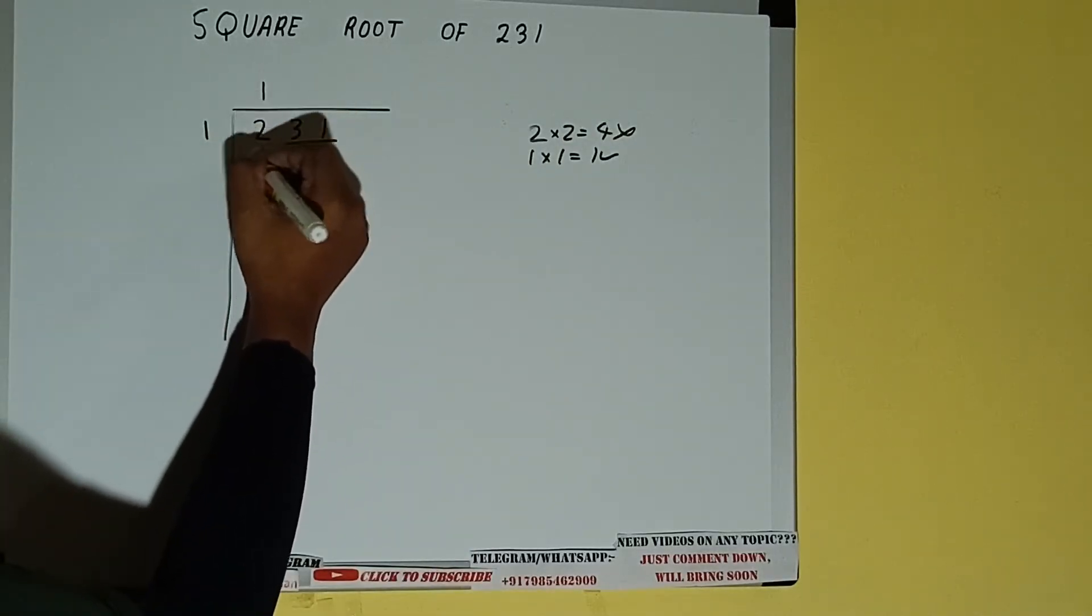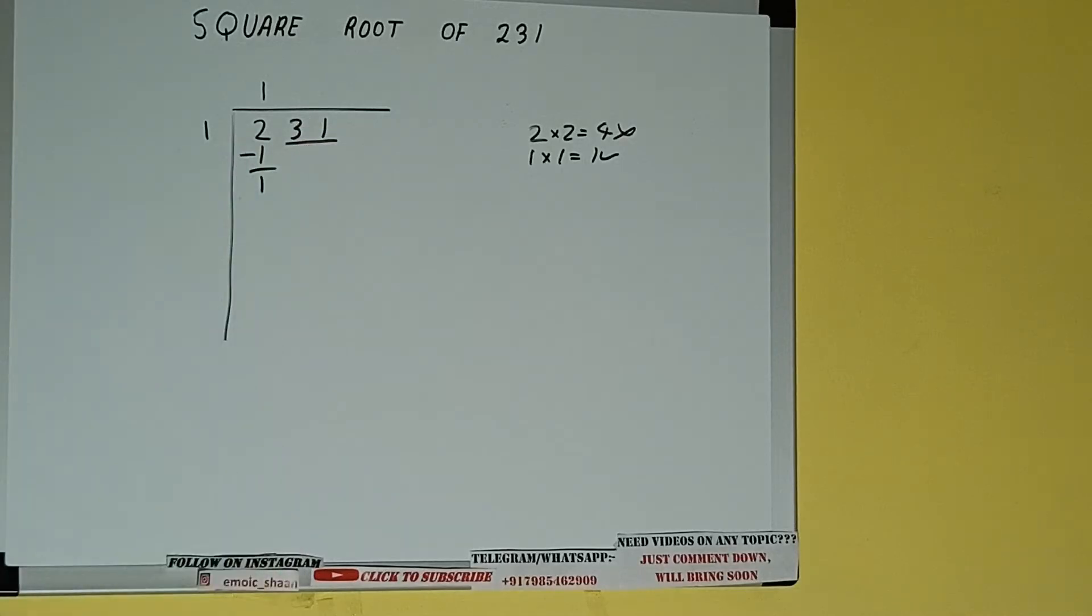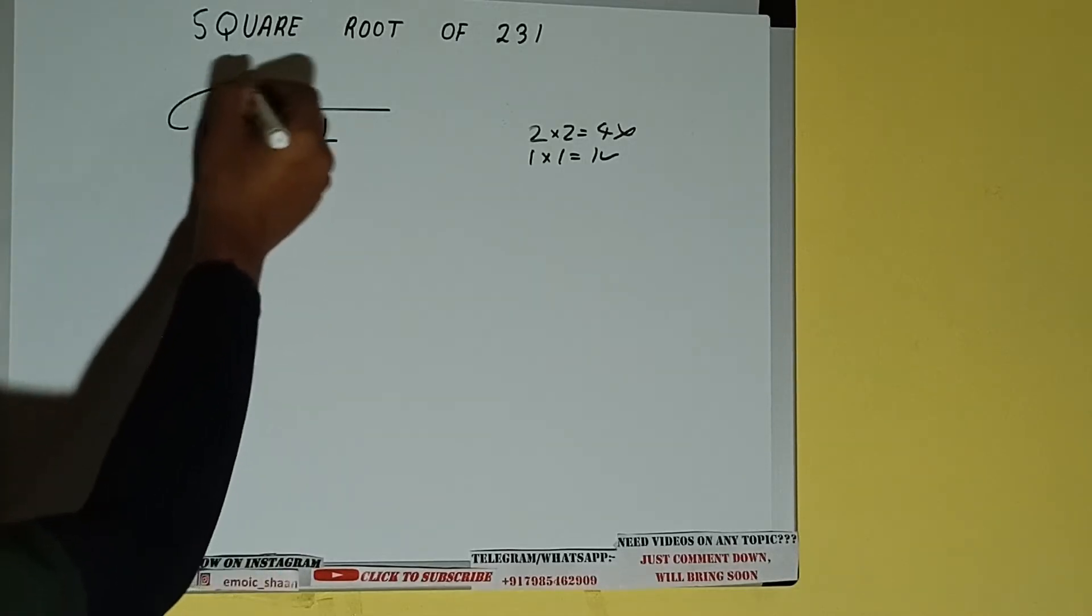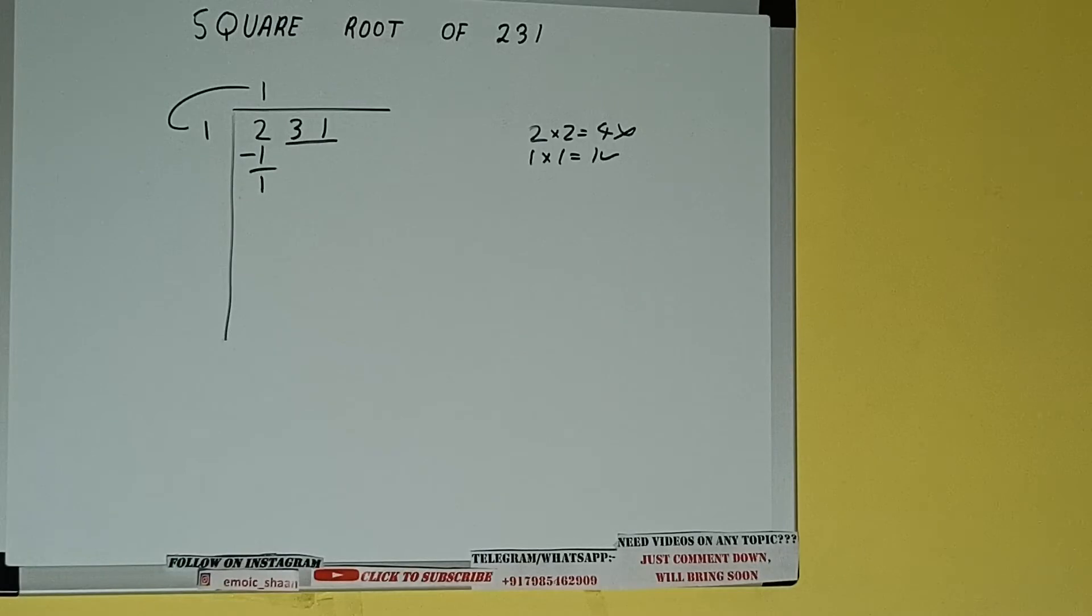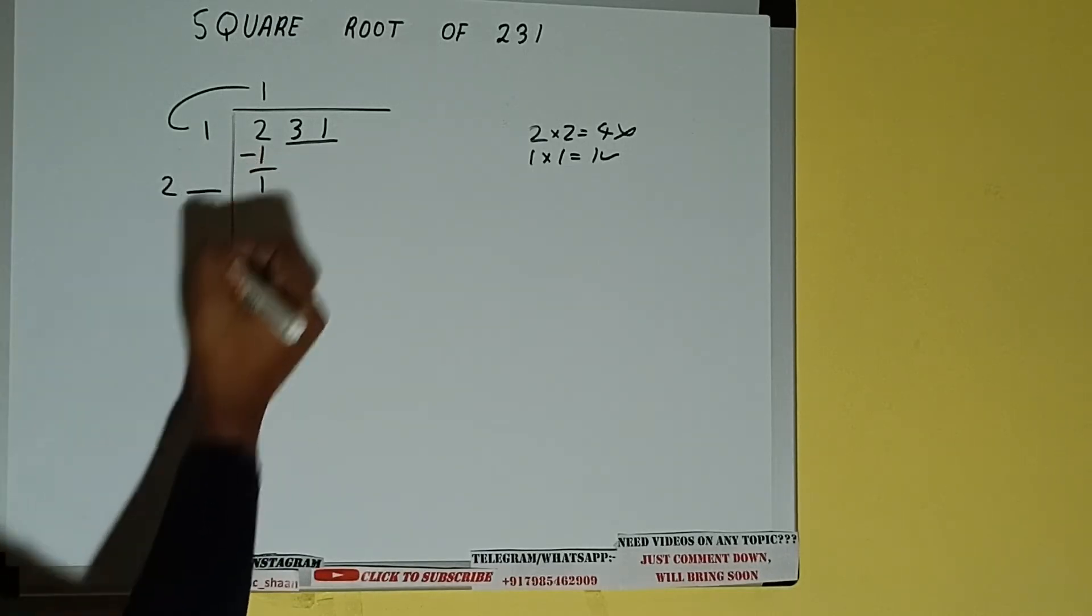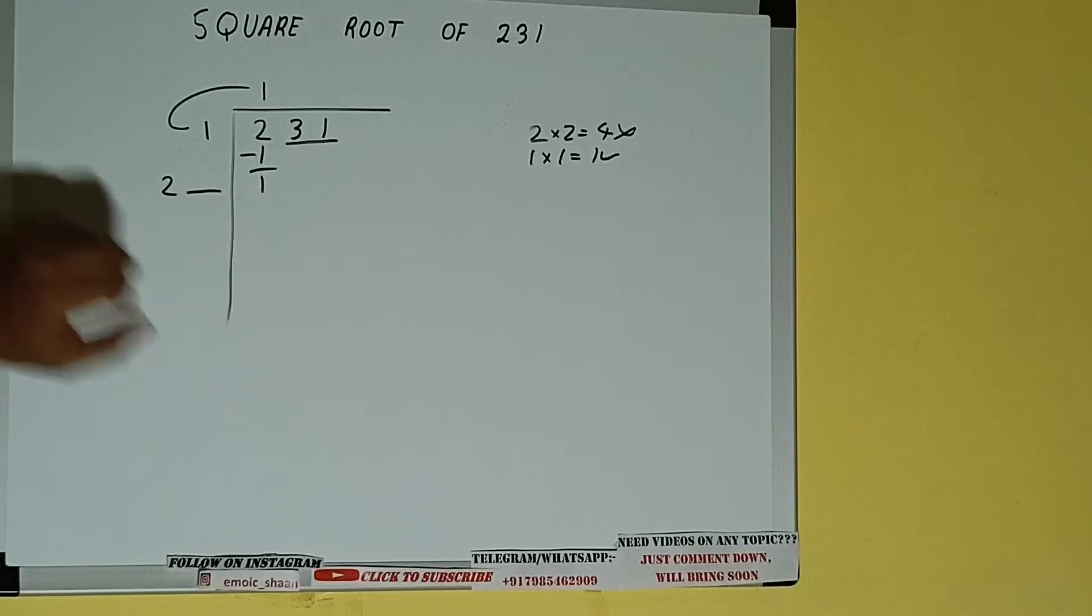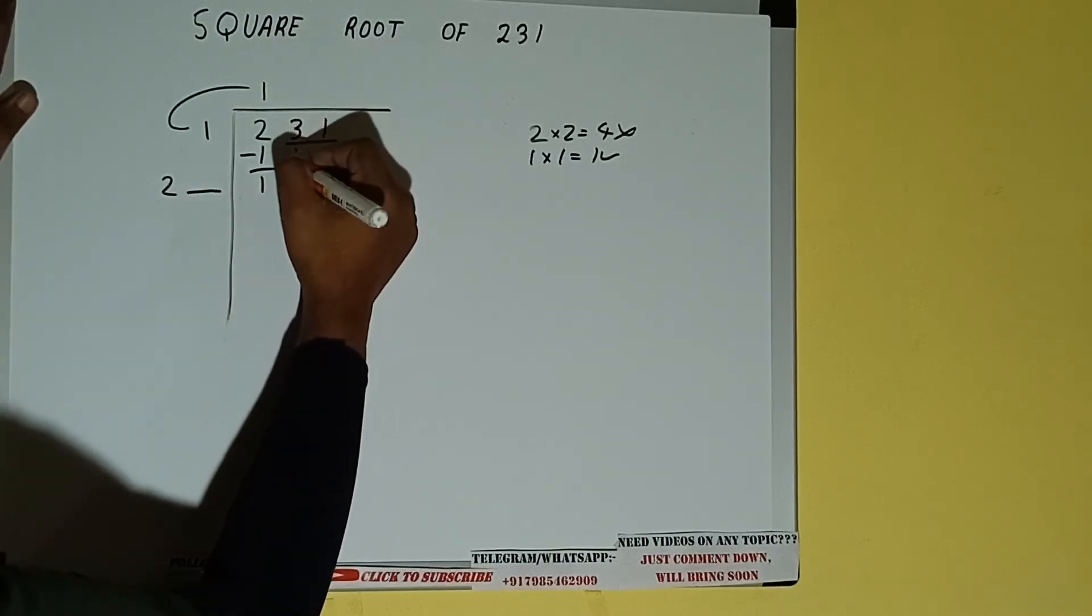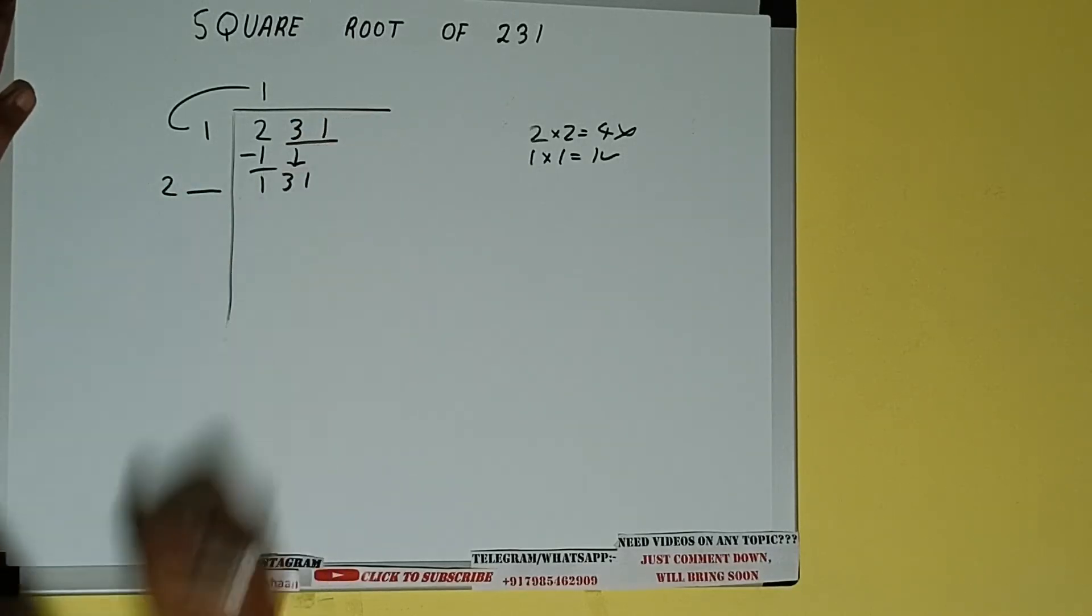So one here and one here. One subtract one will be left. We did one into one, so add both. So one plus one will be two. Write it here and keep a digit extra. And this number we need to make it big, so bring the next pair down and it will be 131.